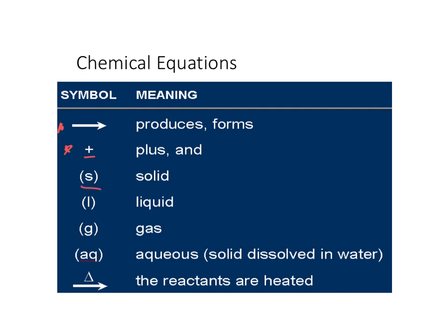'(s)' as a subscript in parentheses represents that your substance is a solid. '(l)' represents liquids. '(g)' represents gases. These will all be subscripts. And lastly is aqueous, or '(aq).' The '(aq)' in parentheses as a subscript next to the element or compound symbol tells you that that substance has been dissolved in water. We're going to do an entire unit about aqueous substances later on, but for now you need to know that AQ means the substance is dissolved in water.